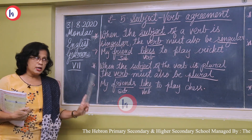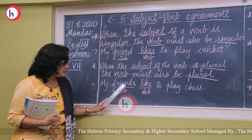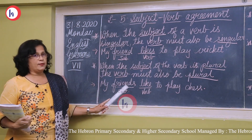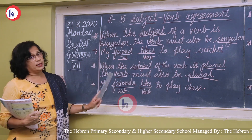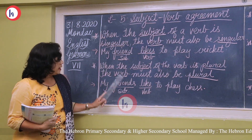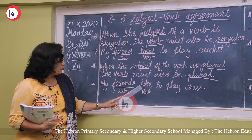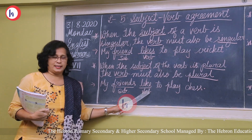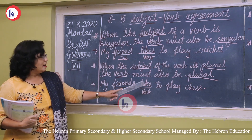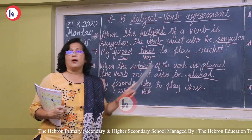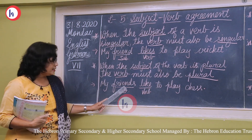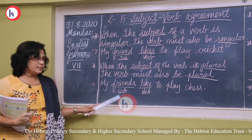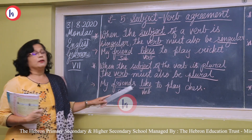When the subject is plural, the verb must also be plural. 'My friends like to play chess.' Here 'friends' is a plural noun — more than one friend — so it is followed by the plural verb 'like.' The sentence 'my friends likes to play chess' is wrong. 'Friends' is a plural subject, so 'like' is the correct plural verb.